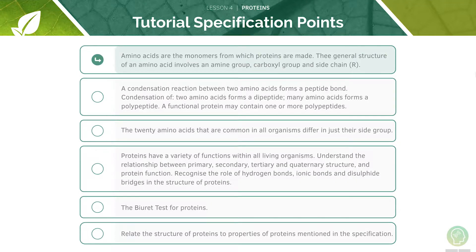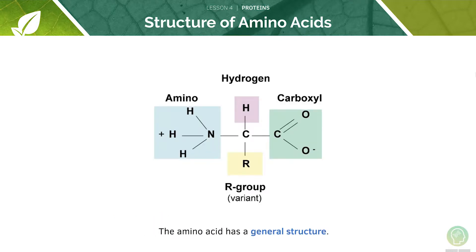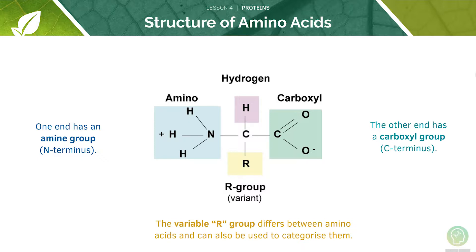We will start off by looking at amino acids. There are 20 amino acids and they all have very similar structures — they all share one type of general structure. On one end they contain an amine group, which is NH₂, sometimes called the N terminus. On the opposite end they contain a carboxyl group ending in COOH, which makes them an acid — this is known as the C terminus. The central carbon atom is bonded to one hydrogen atom and a variable R group.